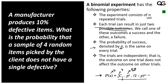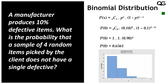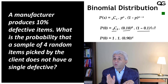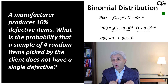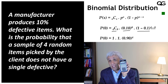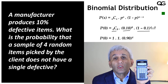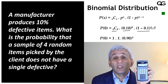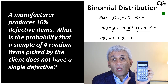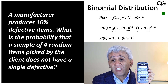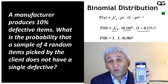Putting all values into the formula gives us 4C0 × (0.10)^0 × (0.9)^4. There are three components: 4C0, 0.1 to the power 0, and 0.9 to the power 4. Let's solve these using the TI30XA simple plain calculator, which is acceptable in most exams where programmable calculators are not allowed. The first value to find is 4C0.